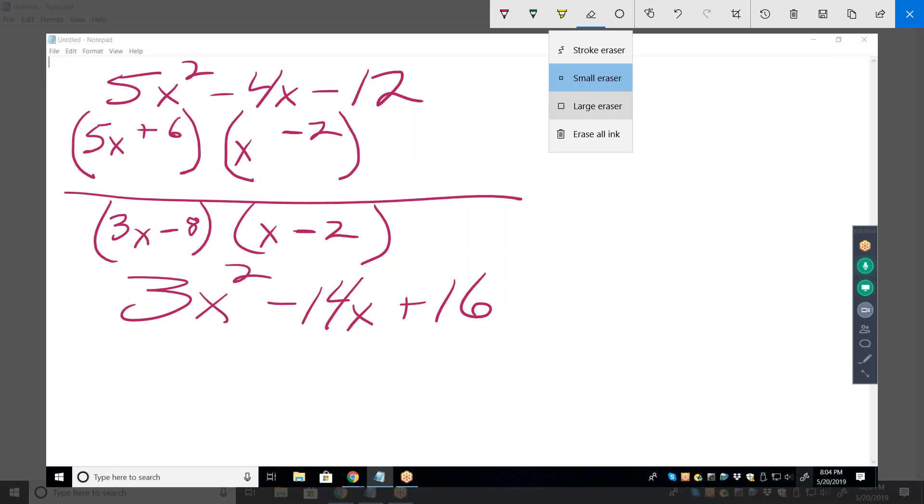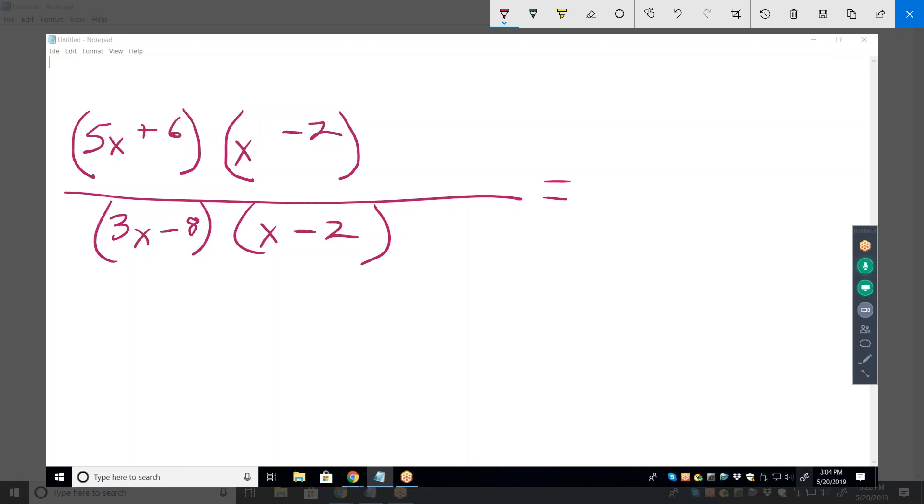Now that we've factored, let's get rid of that. Do some crossing off. What do we have? So then cross off x minus 2, and then it'd be 5x plus 6 over 3x. That's how you do it. Mm-hmm.